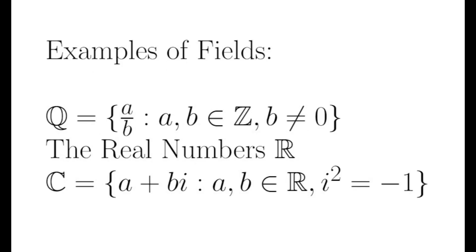So some examples of fields. The rational numbers Q, which are numbers that can be expressed as the ratio of two integers. The real numbers R, or the complex numbers C, which are numbers of the form a plus bi where a and b are reals and i is the square root of negative one. All form fields under the usual addition and multiplication of numbers.